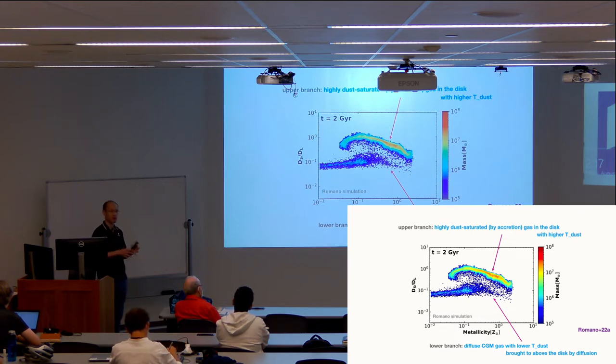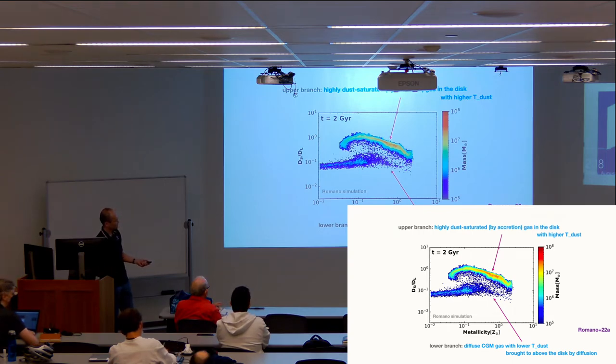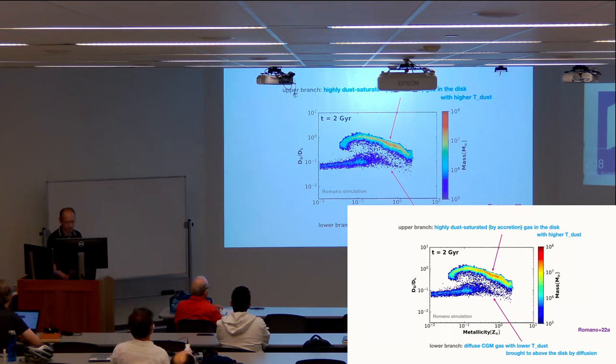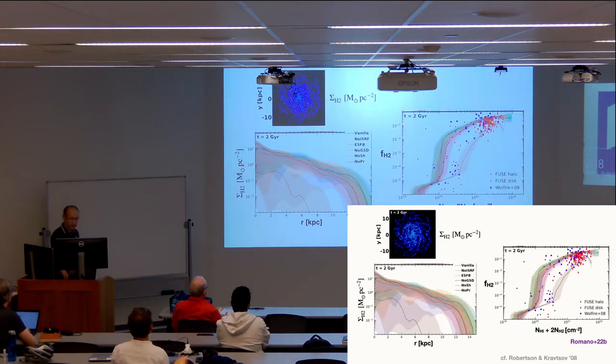One interesting feature that we found in Romano's work is that this small to large grain ratio can be used like a chronological timer, just like the alpha enrichment evolution that we heard yesterday for galactic chemical enrichment. But here you see the upper branch and lower branch. Upper branch is the highly dust saturated gas in the disc with high dust temperature by accretion process at later times. The dense medium, the large grain is actually diffusing to low density diffuse CGM. This is CGM gas with low temperature of the dust brought above the disc by diffusion. That will gradually start to appear at late times. It's similar to chemical enrichment for the dust. In the future if things like this can be observed, it'll be a nice check for modeling of the small versus large.